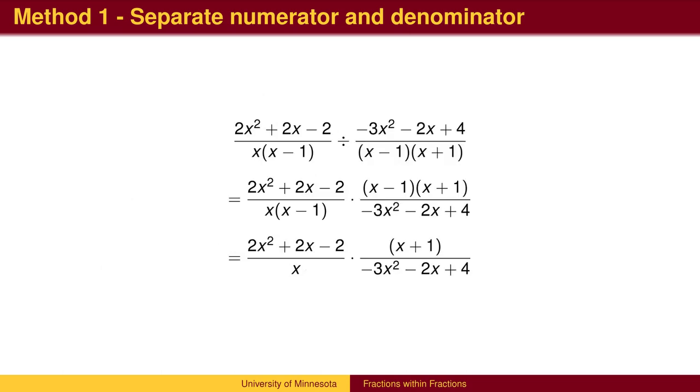Once the numerator and denominator have been combined into a single fraction, this is now a division problem. The numerator is divided by the denominator, so we multiply the numerator by the reciprocal of the denominator, canceling common factors.